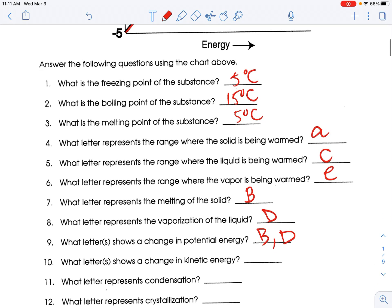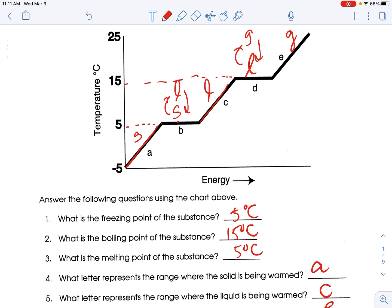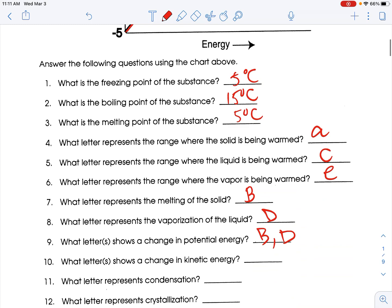Which letters show a change in kinetic energy? That means the temperature is changing. That's going to be A, C, and E, wherever the temperature is increasing.